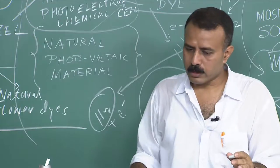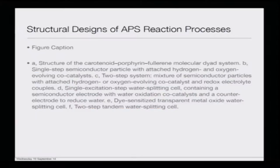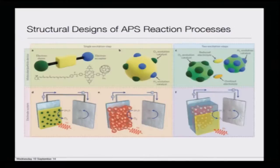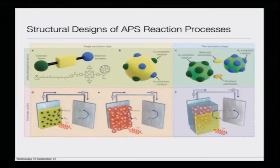Now, to emulate these photosystems, let us come to the structural designs of APS reaction processes. Looking at the first picture — A and B — we will talk about the structure of the carotenoid-porphyrin-fullerene molecular triad system. You have the carotenoid — a long tail molecule — the porphyrin sitting there, which is the same molecular class as chlorophyll, and the fullerene ball on the other side. There is also a single-step semiconductor particle attached with a hydrogen evolving catalyst and an oxygen evolving catalyst.